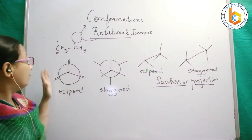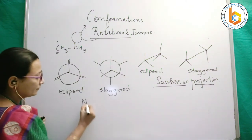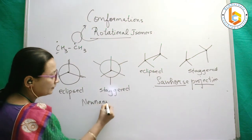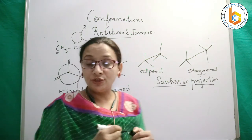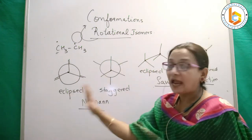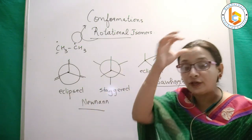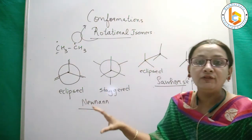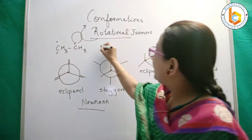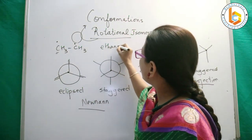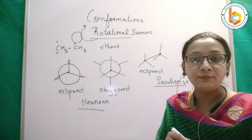This is how, by Newman projection and by sawhorse projection, you can represent the eclipsed and staggered forms for a conformational isomer. Here we have taken the example of ethane, CH3-CH3.